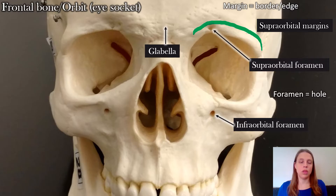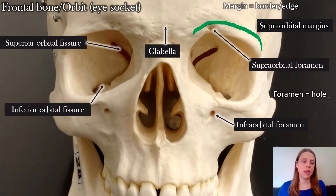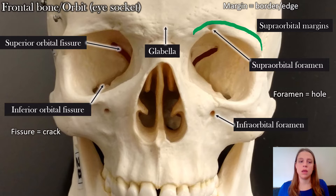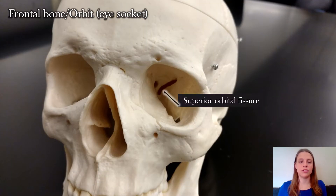If you look in the back of the eye socket you can see some cracks. The top crack is the superior orbital fissure and the bottom crack is the inferior orbital fissure — the word fissure just means a crack. Rotating the skull to the side a bit, you can see the superior orbital fissure and right next to it is the optic canal.